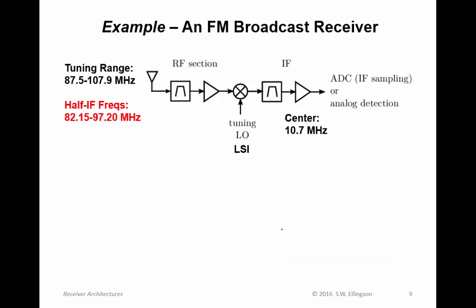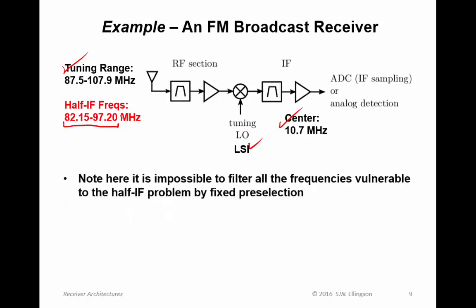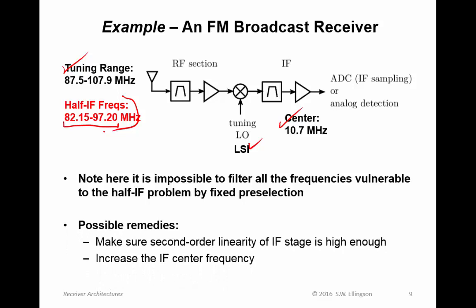Here's an example of the half-IF problem affecting an FM broadcast receiver. Taking the tuning range and placing a 200 kHz signal at 10.7 MHz using low-side injection, the half-IF frequencies fall in a certain range. It is impossible to filter all the frequencies vulnerable to the half-IF problem by fixed preselection. Possible remedies: ensure adequate second-order linearity of the IF stage, or increase the IF center frequency — if IF goes up, these vulnerable frequencies go down — giving strong incentive to use higher IF frequencies.